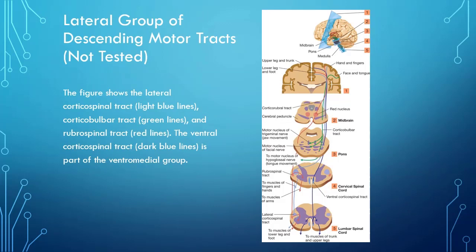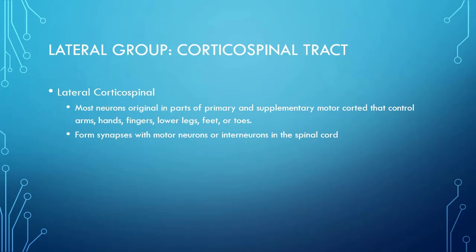If you want to think of the lateral group as sort of the independent, almost 'free will' section of movement, the ventromedial is very much the robotic pre-programmed portion. When looking at the lateral group, we have at least four different tracts. The lateral corticospinal tract is responsible for motor control for arms, hands, legs, feet, and toes, and has synapses with either the motor neurons or the interneurons of the spinal cord.